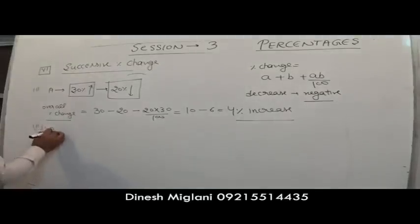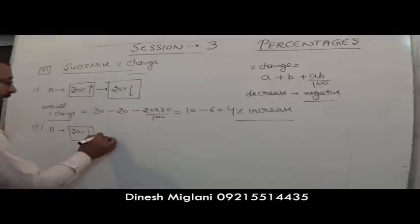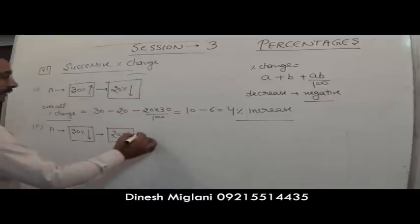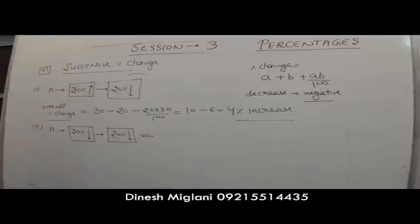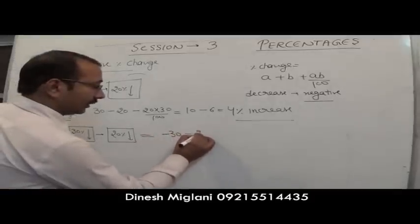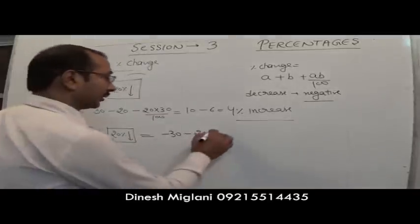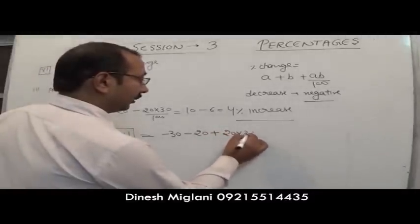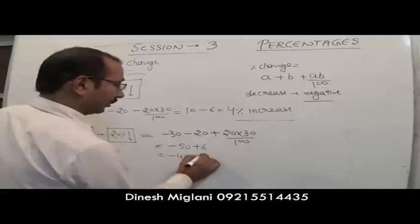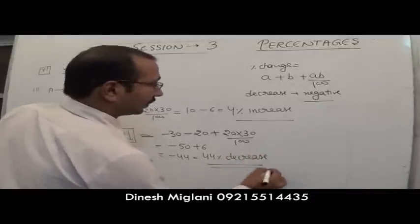One more: number a first decreases by 30%, then further decreases by 20%. Both are negative: (−30) + (−20) + (−30 × −20)/100 = −50 + 6 = −44. There is a decrease of 44%.